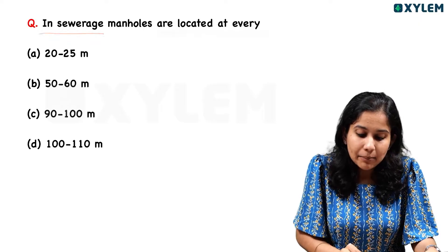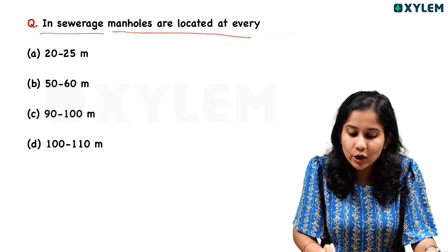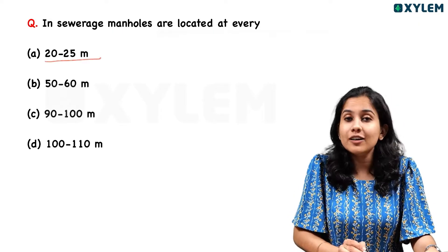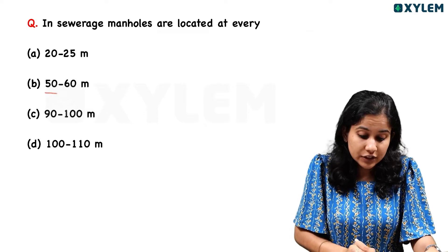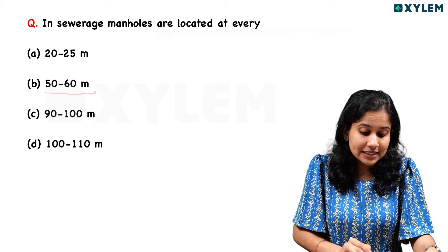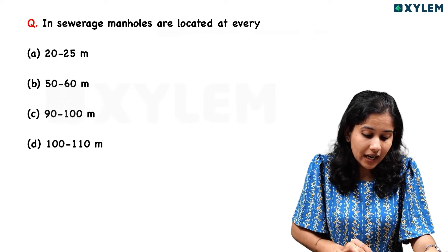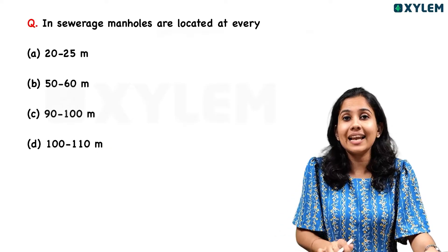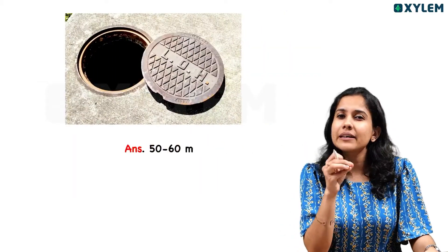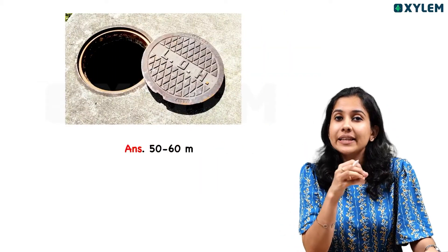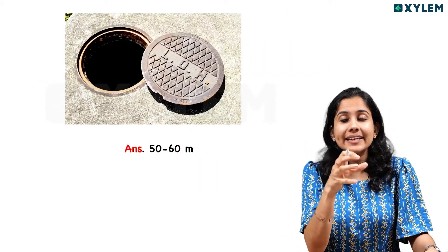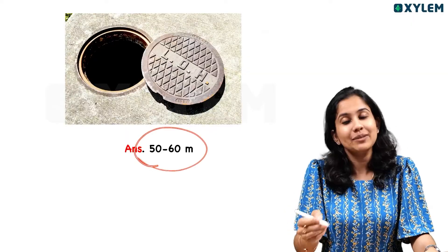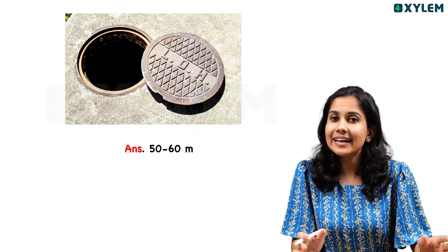Next question: manholes are located at every — 20 to 25 meters, 50 to 60 meters, 90 to 100 meters, or 100 to 110 meters? The answer is 50 to 60 meters.